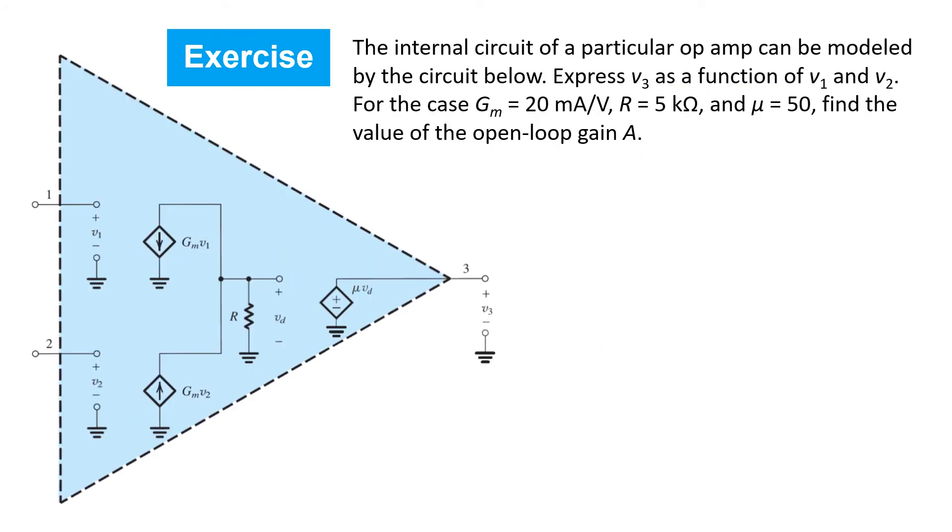Here's the model of an internal circuit of a particular op amp, and let's consider how closely it meets our ideal model. First, we see that the input terminals are open circuited and therefore have infinite input impedance. Second, we see that the output is an ideal voltage source with zero output resistance. Next, let's find the gain of the op amp by expressing the output voltage v3 as a function of the two input voltages v2 and v1. We'll first find the voltage at the intermediate node vd.